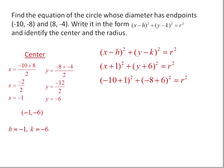So we have negative 10 plus 1 squared plus negative 8 plus 6 squared equals r squared. And now we simplify. Negative 10 plus 1 squared gives us negative 9 squared, and negative 8 plus 6 squared gives us negative 2 squared.